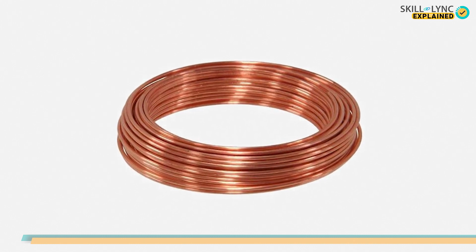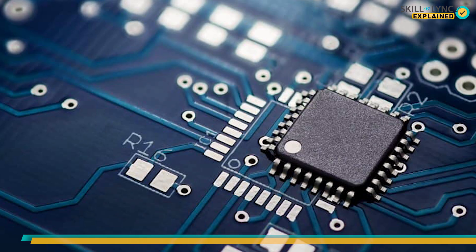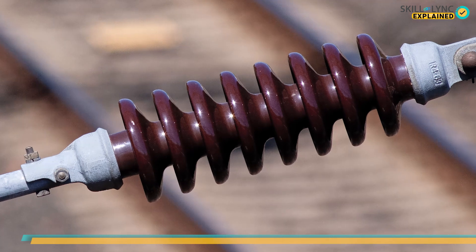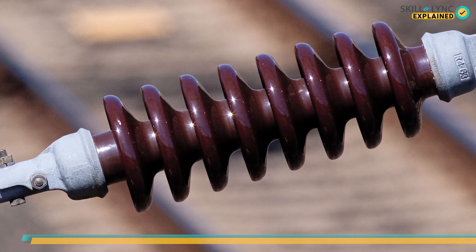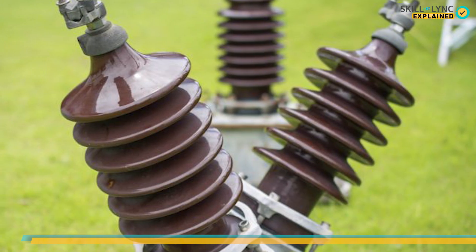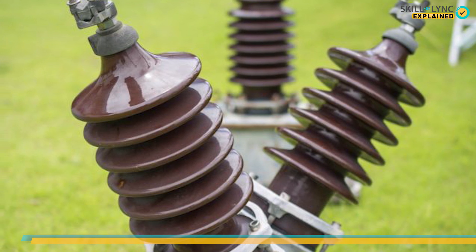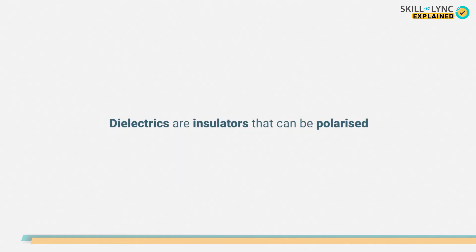We all know that materials can be classified into conductors, semiconductors, and insulators based on their electrical conductivity. Of these types, insulators are the materials that do not conduct electricity. Dielectrics are a type of insulators that do not conduct but can be polarized when electricity is applied.